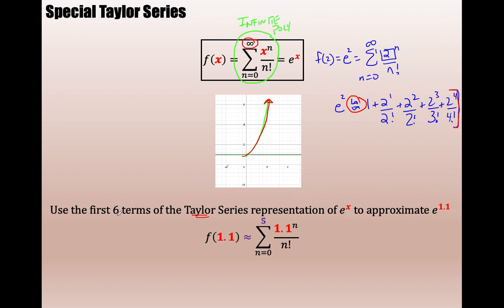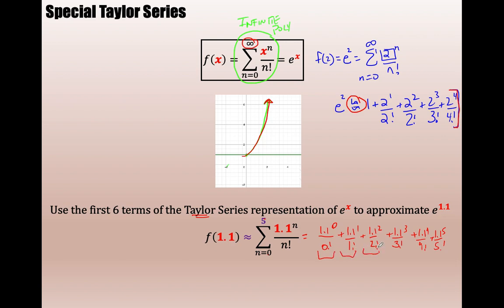That is one of the major uses of Taylor series. So if I ask you to use the first six terms of the Taylor series representation of e to the x to approximate e to the 1.1, here's what I'm asking. First six terms means I'll stop at n equals 5 because I start at zero. So I want 1.1 to the zero over 0 factorial — that's one, two, three, four, five, six terms. Stop — this is you truncating. You're cutting off the infinite series, which is why you have to write an approximately-equal sign.